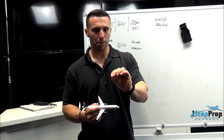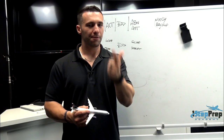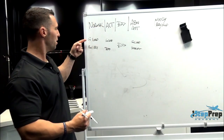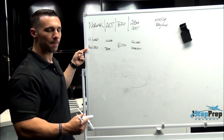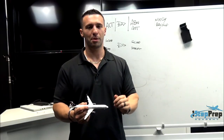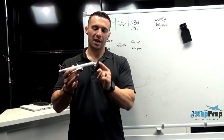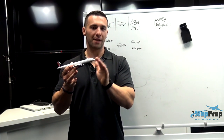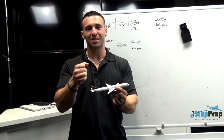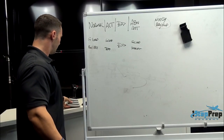Now let's look at flare mode. In normal law we discussed ground mode with its direct side stick relationship and flight mode with G-load and roll rate. In flare mode, you are still very much in G-load and roll rate — nothing changes there. But the jet takes a snapshot of the pitch attitude at 50 feet, and then at 30 feet it applies a nose-down pitching moment that you need to counter with side stick input. Why would the manufacturers do that? Very logical.